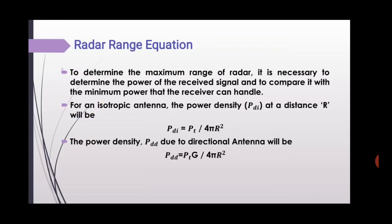Now, radar range equation. The range of the radar is said to be at maximum range when the received echo signal has power equal to that of the minimum detectable signal. Radar का range maximum कब है? जब जो power radar receive करता है, वो minimum detectable signal के equal होगा — तब हम कह सकते हैं कि radar का range maximum है।